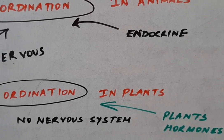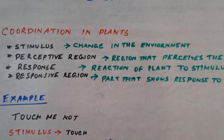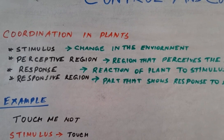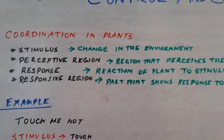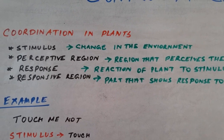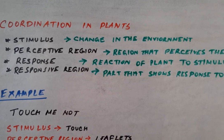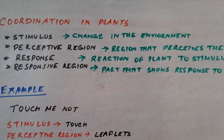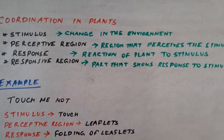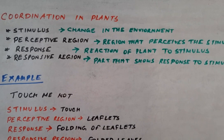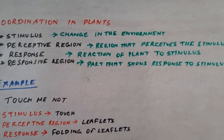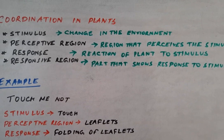In plants, the stimulus is the agent — the change in the environment — that causes movement or a response in the plant. The perceptive region is the plant region that perceives and detects the stimulus. The response is the reaction of the plant to the stimulus. The responsive region is the part of the plant which responds or shows a response to the stimulus.